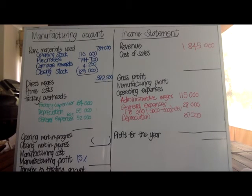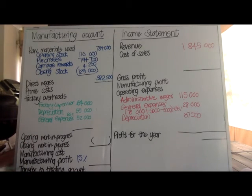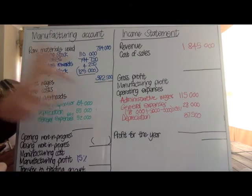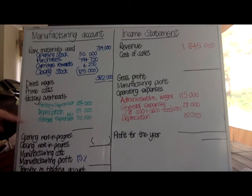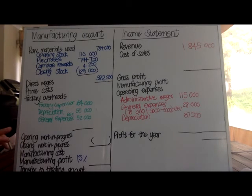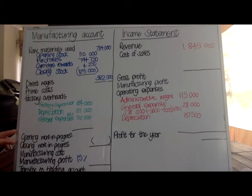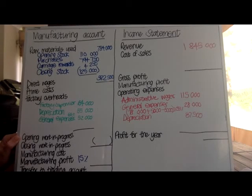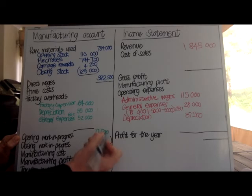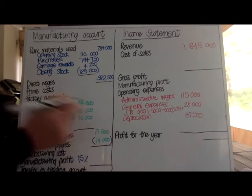Work in progress uses the same calculation: add opening and subtract closing. Whatever was in the factory being made at the beginning of the year compared to what was there at the end contributes to the actual manufacturing cost — the cost of making those goods. Opening WIP is $17,500 and closing WIP of $14,000 needs to be subtracted. I like to use brackets because it's very easy to see it has to be minused.